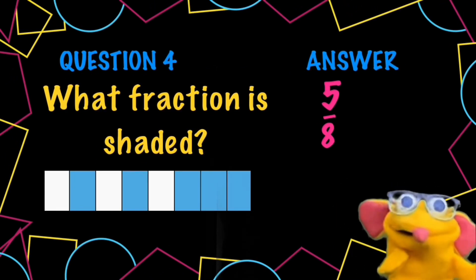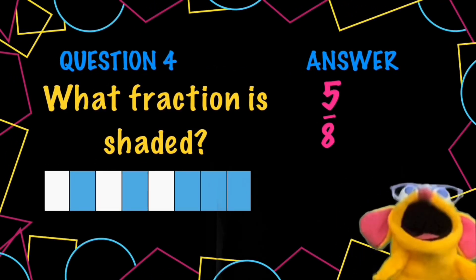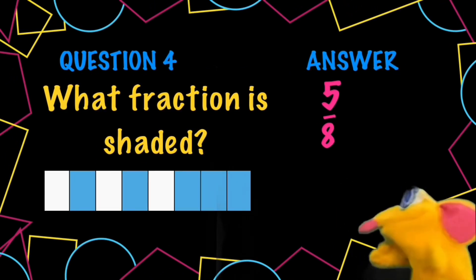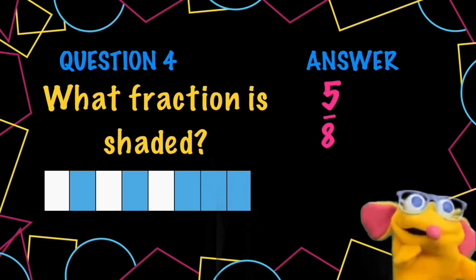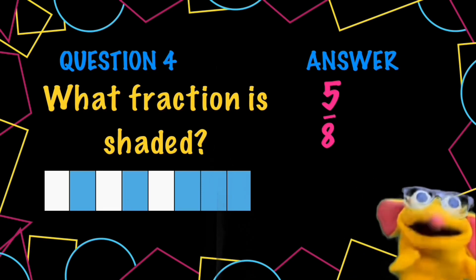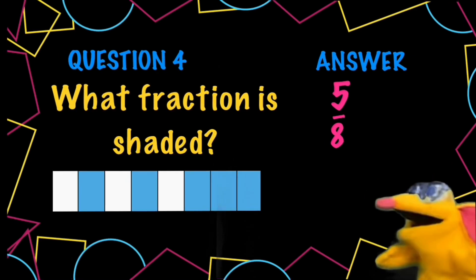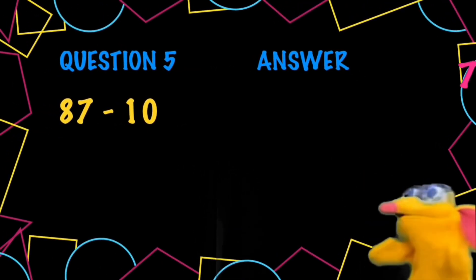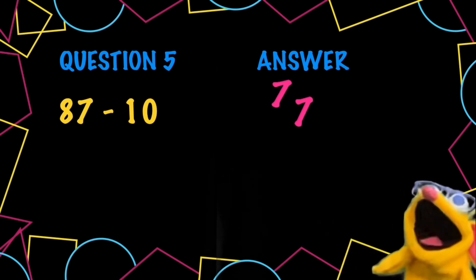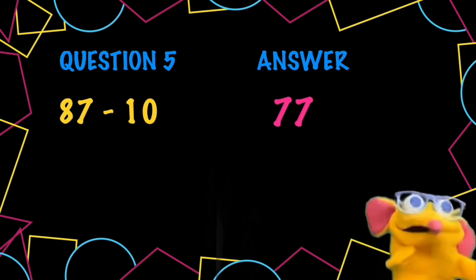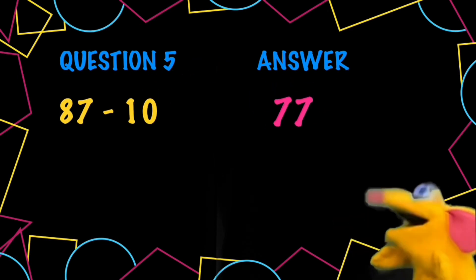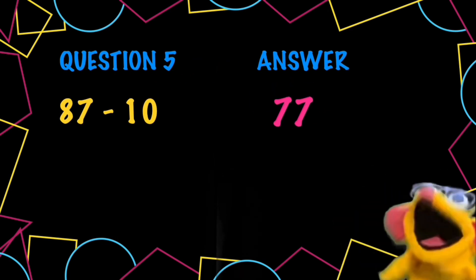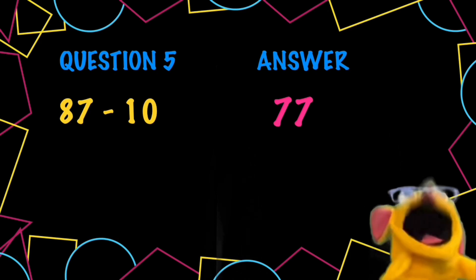What fraction is shaded? Well, we count the parts and there are 8 parts in this fraction. 5 of them are shaded, so 5 out of 8 — five eighths. Question 5: Subtract 10 from 87. Let's look at the tens number — 8 tens take away 10 is 7 tens. 7 tens, 7, 77.